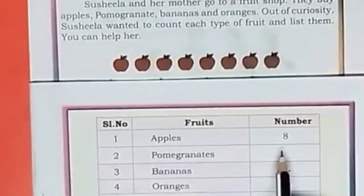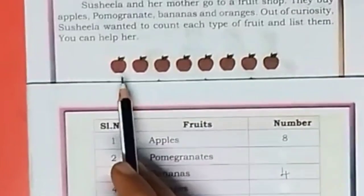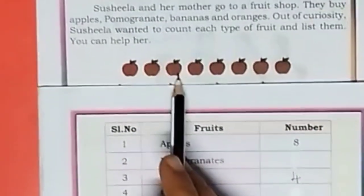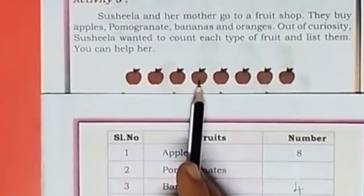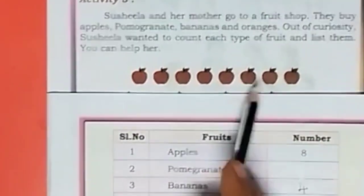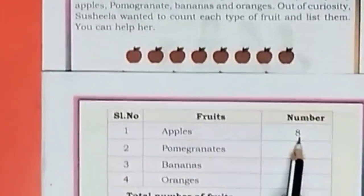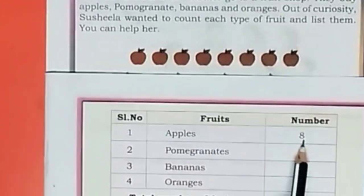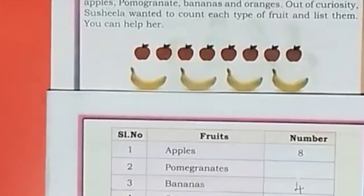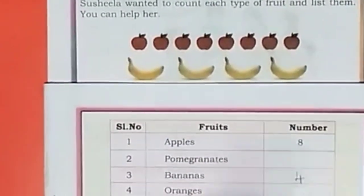How many apples are there? 1, 2, 3, 4, 5, 6, 7, 8. There are 8 apples. How many oranges are there?